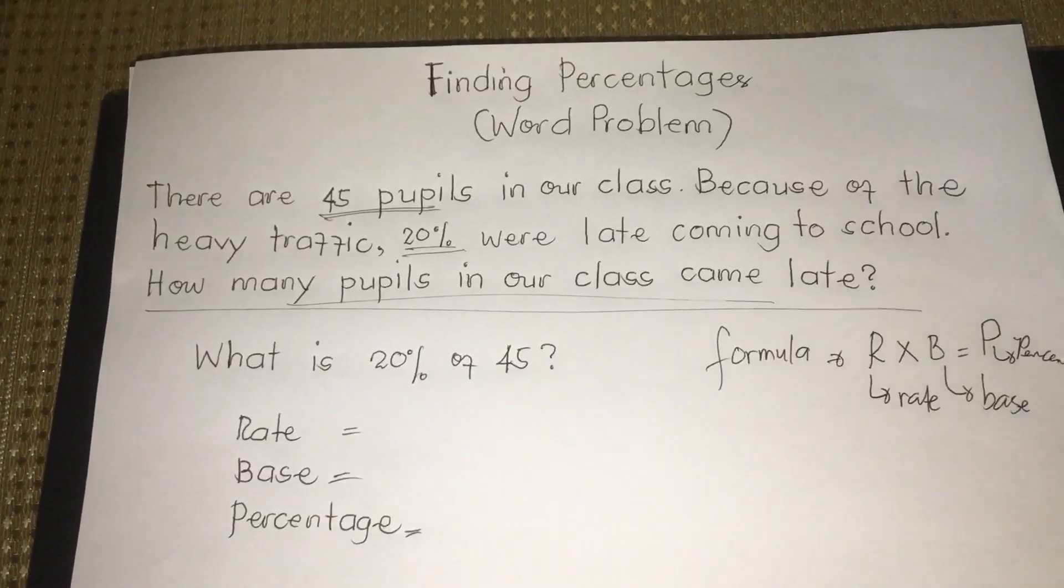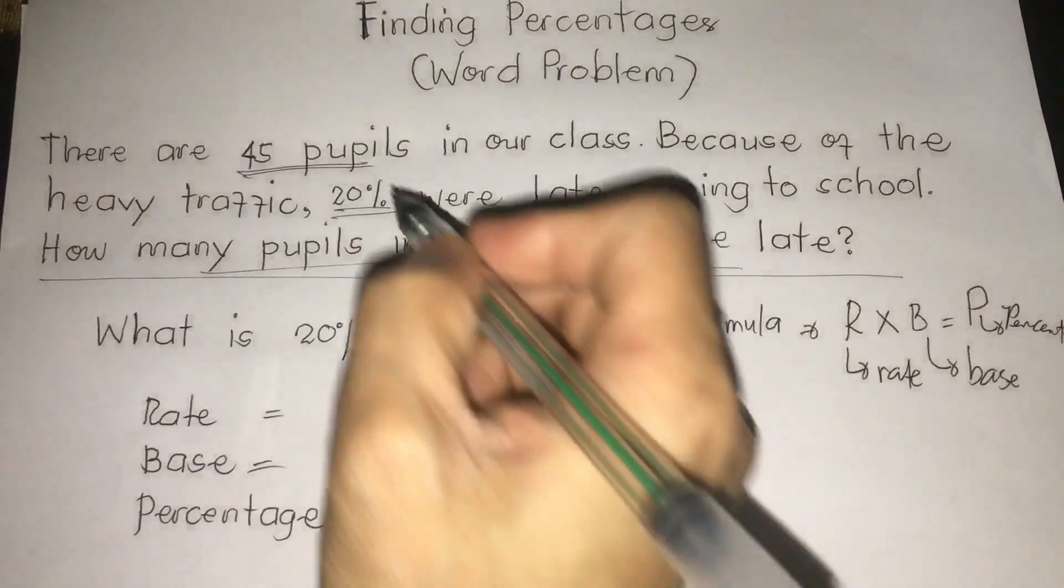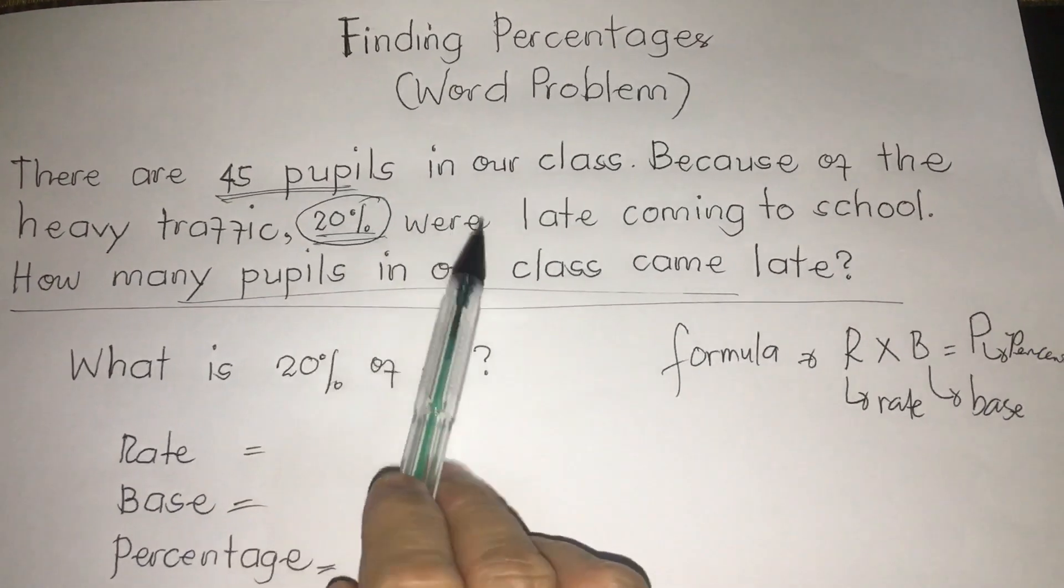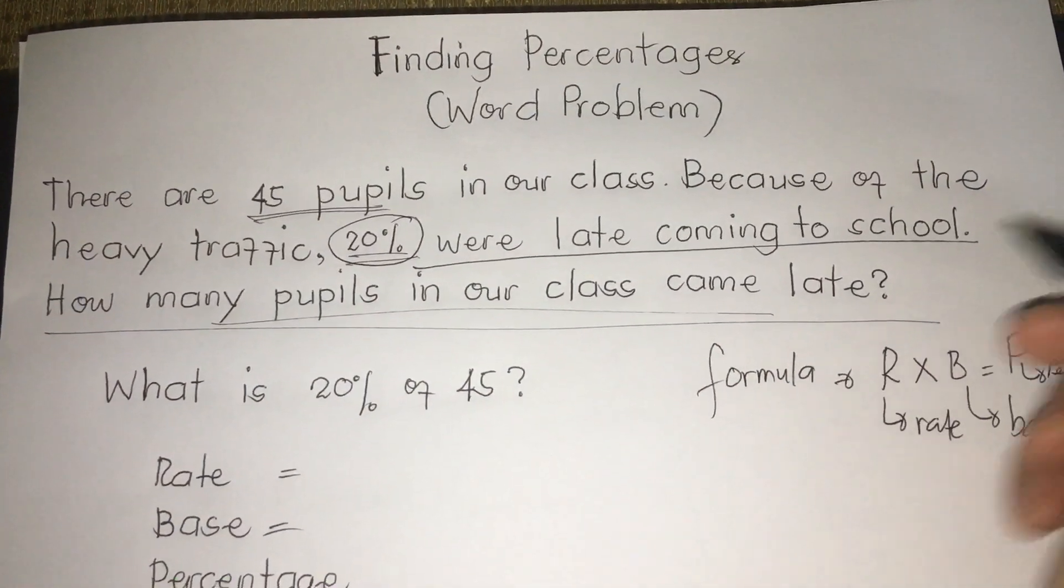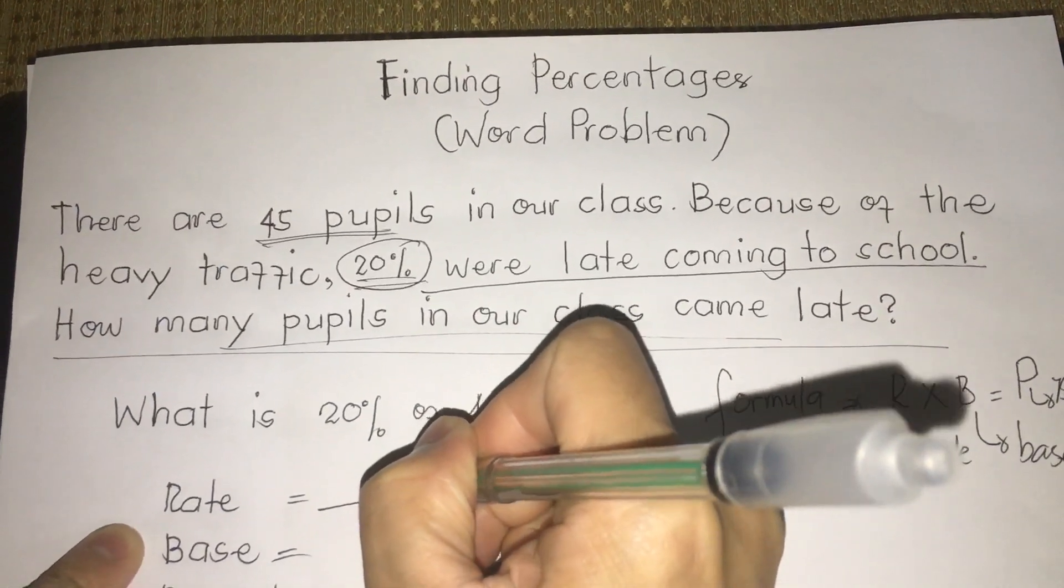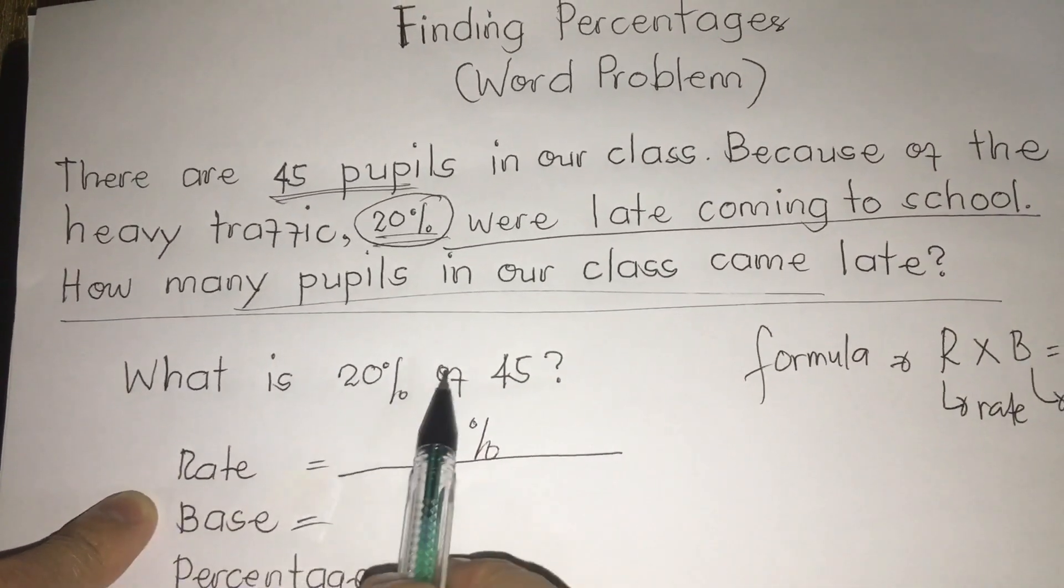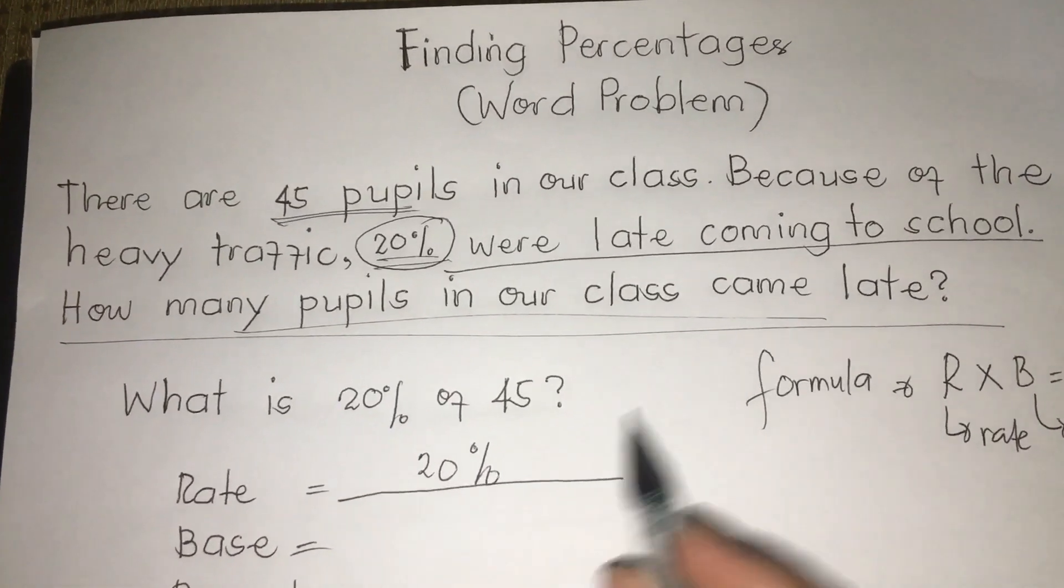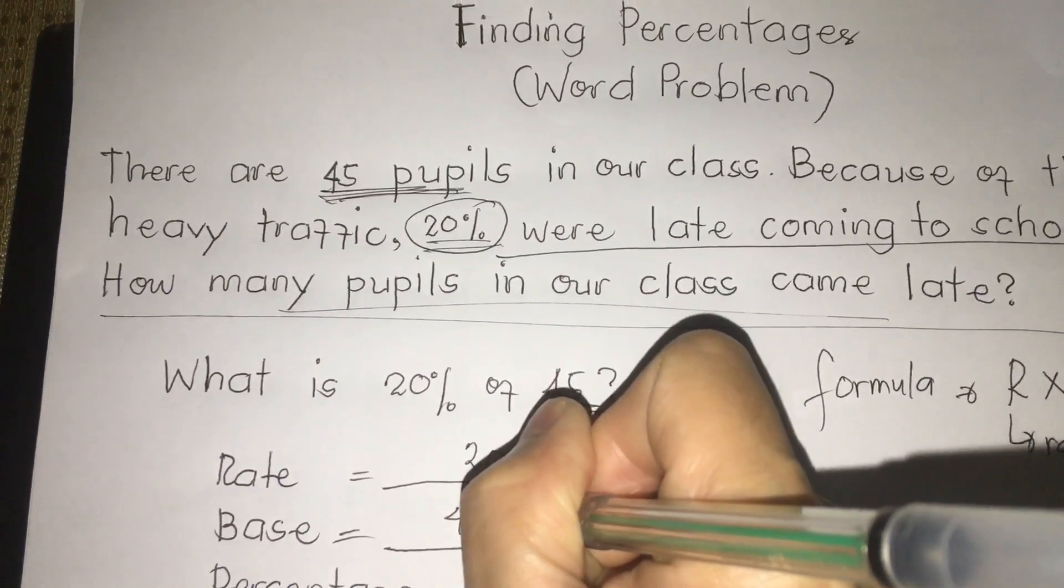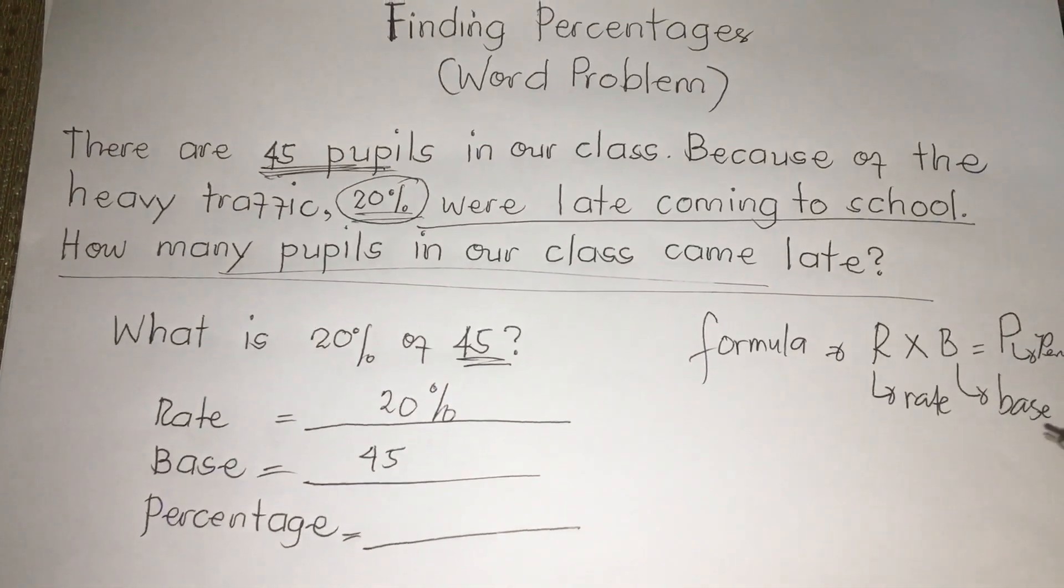Now we are going to distinguish the rate and base. We have first the rate. You are going to find it by the symbol of percent. So we have 20% were late coming to school. We are going to put it here under rate: 20%. We can restate our equation as: What is 20% of 45? So rate is 20%, so our base is 45.